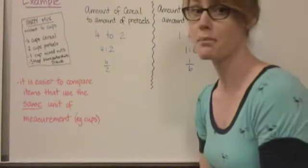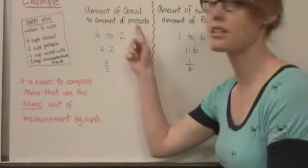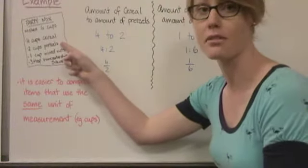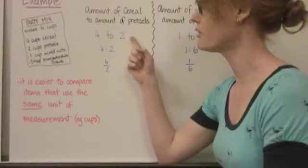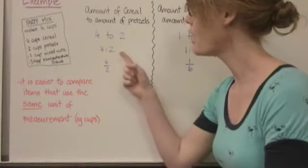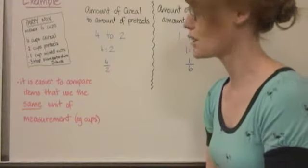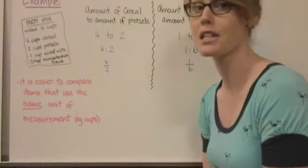So if we wanted to compare the amount of cereal to the amount of pretzels, we would look at the amount of cereal and pretzels in the recipe. And it could be written as 4 to 2, 4 colon 2, or 4 over 2. So the ratio of cereal to pretzels is 4 to 2.